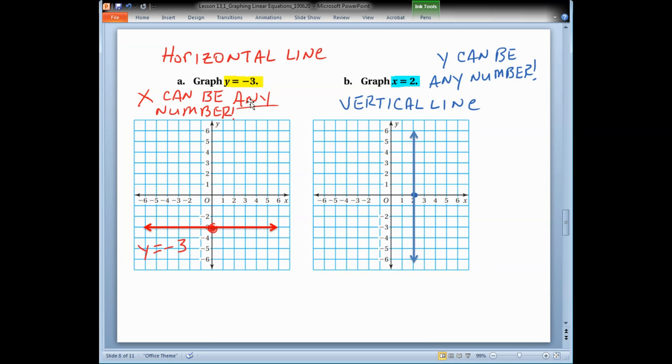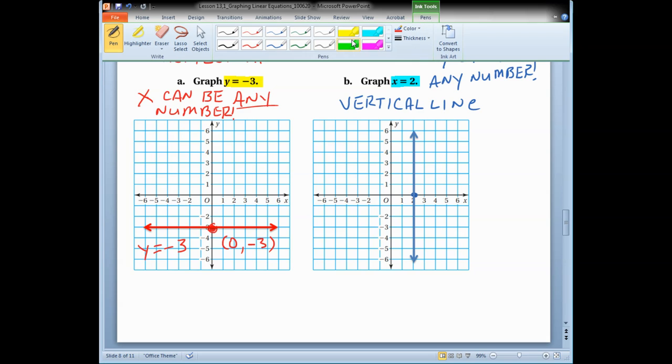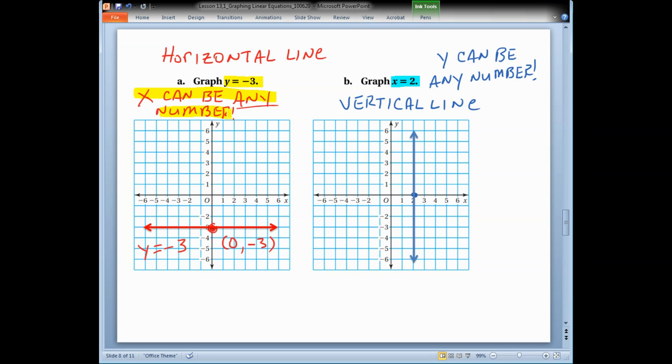Alright. So we're going to graph y equals negative 3. So then I plot the point. I go 0. That's my x-coordinate. And negative 3. So there's that point. I plotted it. And I just drew a horizontal line through it. And remember, x can be anything on a horizontal line. x can be any number. We don't care. We just want y equals negative 3. And on this line, any coordinate point on this line, the y-coordinate is negative 3.